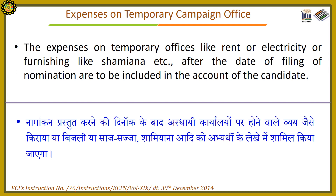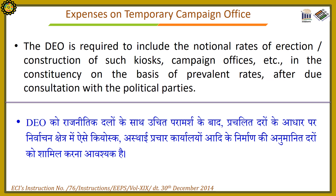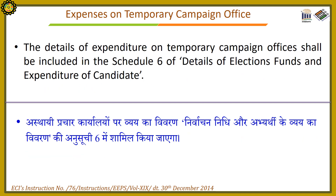Expenses on Temporary Campaign Office: Expenses like rent, electricity, or furnishing such as shamyana etc., after the date of filing of nomination, are to be included in the account of the candidate. The District Election Officer is required to include the notional rates of erection or construction of such kiosks, campaign offices etc., in the constituency on the basis of prevalent rates after due consultation with the political parties. The details of expenditure on Temporary Campaign Office shall be included in Schedule 6 of details of election funds and expenditure of the candidate.